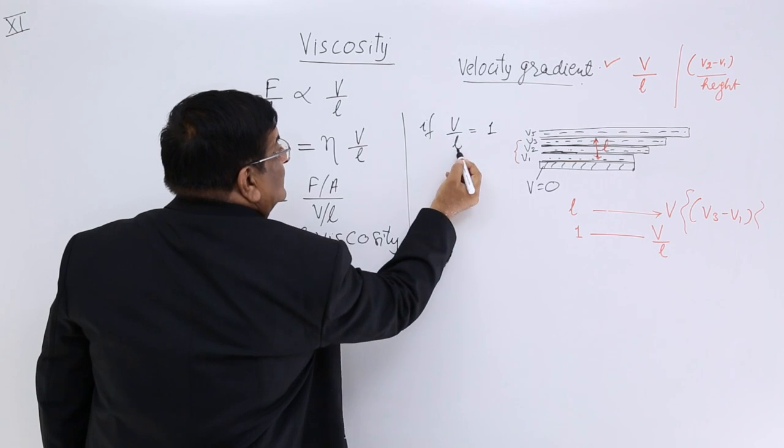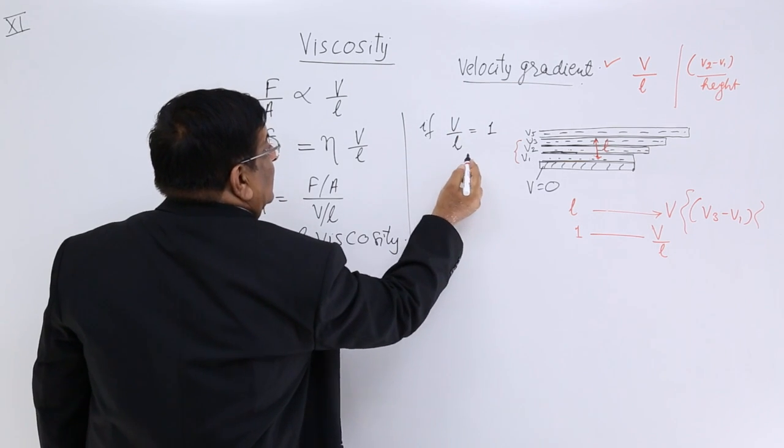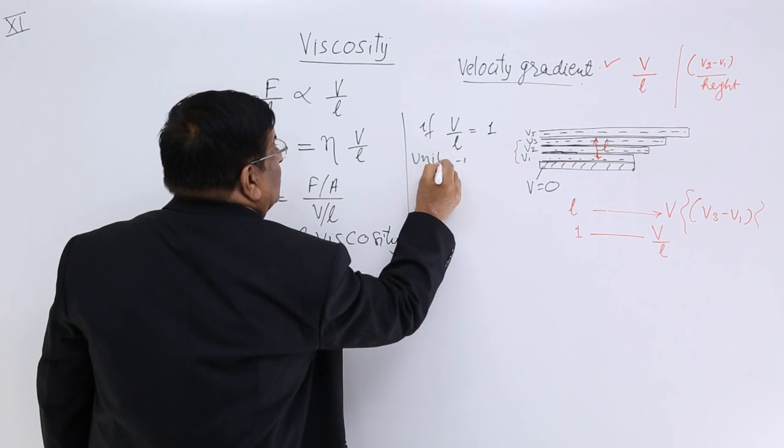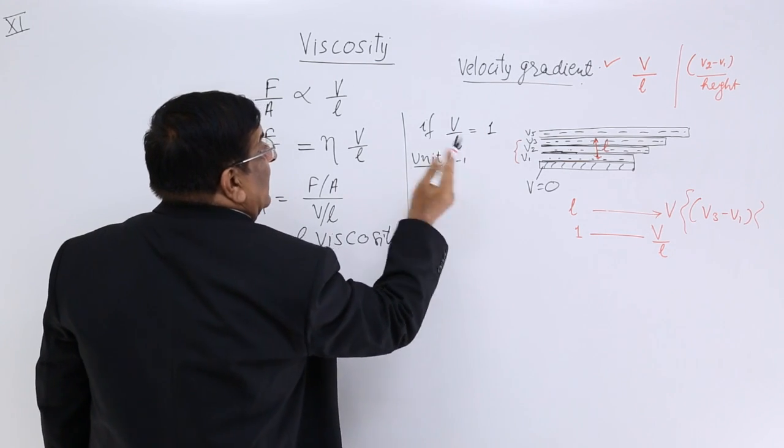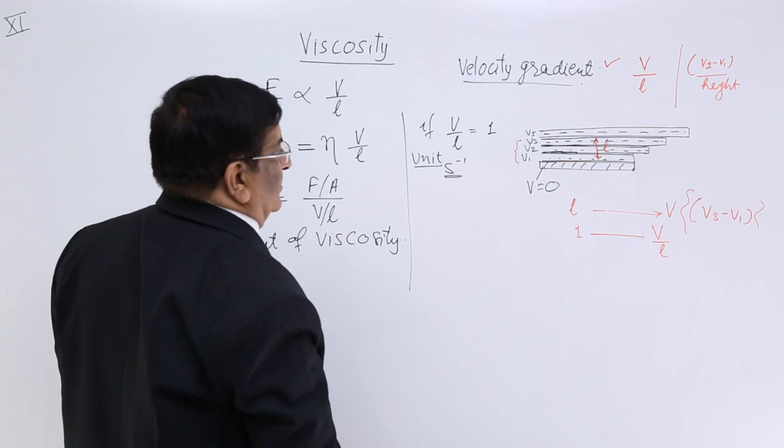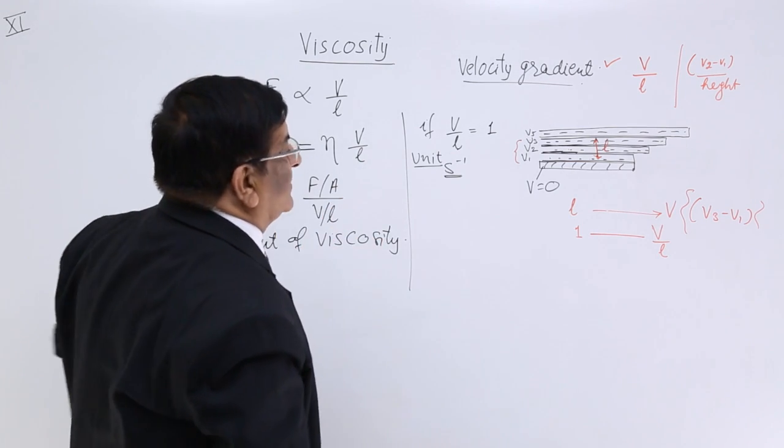This is meter. So meter per second upon meter will give only per second. Please remember, what is the unit of velocity gradient? Per second. This is very important. Sometimes it is asked in the examination. So dimensions T minus 1.